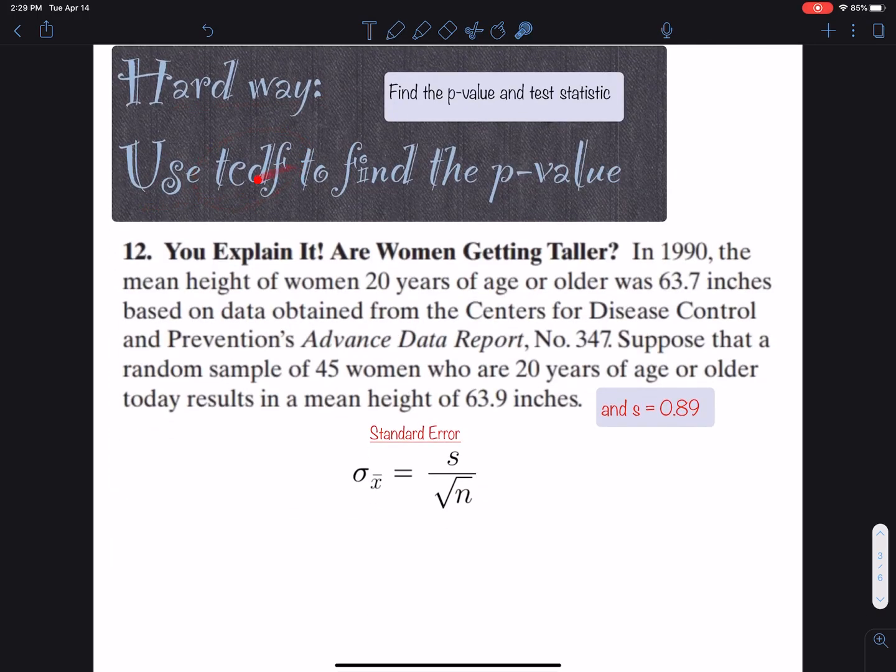The hard way uses TCDF to find the p-value and test statistic. If I draw a normal curve with the mean 63.7 in the middle - that's the 1990 assumption - and put 63.9 here as the sample mean, we find the shaded region to the right because we're testing if women got taller. We shade to the right and call this the p-value.